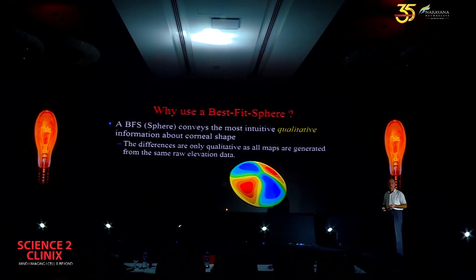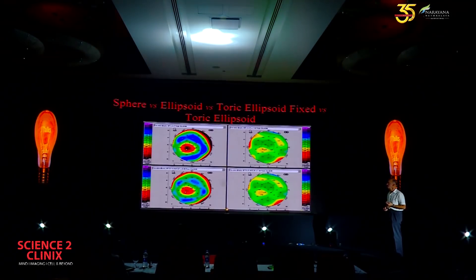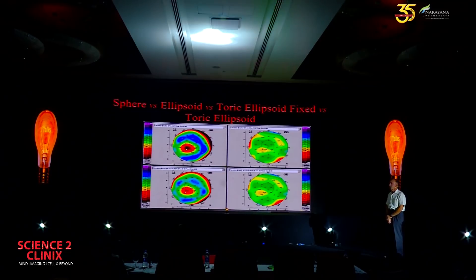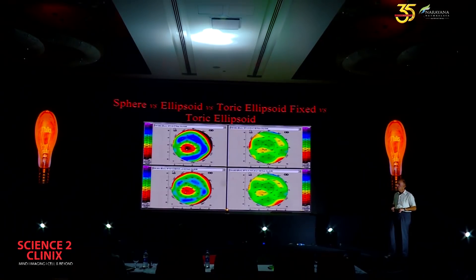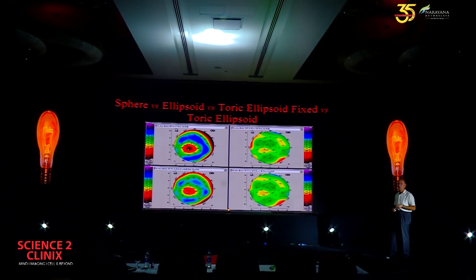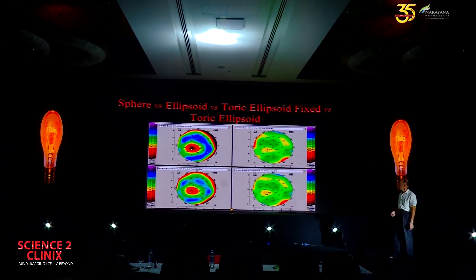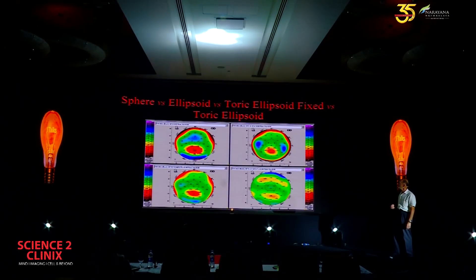Why do we use a best fit sphere? The best fit sphere is the easiest to interpret and gives the most intuitive result. Looking at four maps — best fit sphere, ellipsoid, toric ellipsoid, and best fit toric ellipsoid — the positive island is always easiest to see on the best fit sphere. But is it really the best shape for screening ectatic disease?